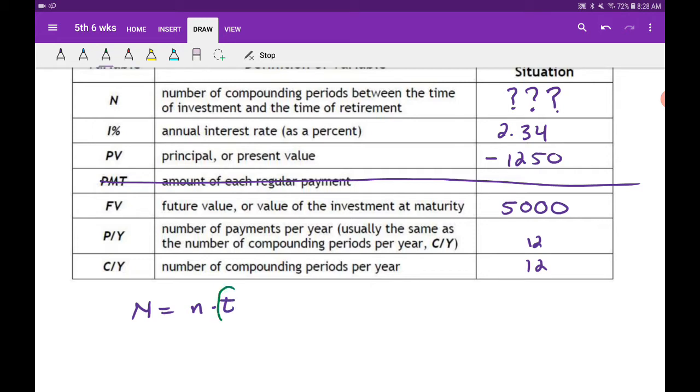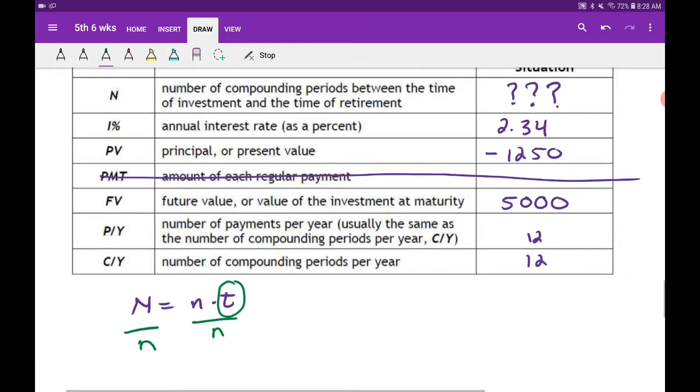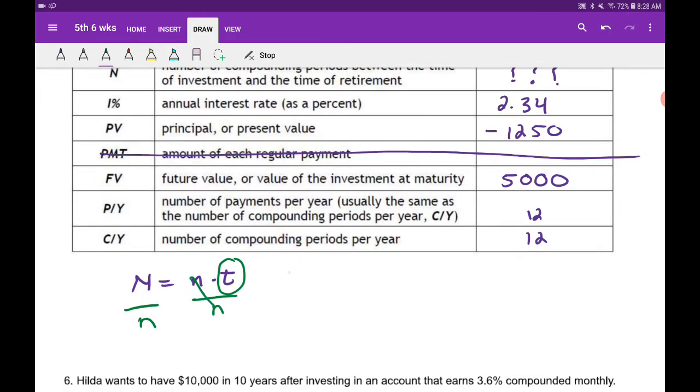Usually that just involves us dividing both sides by little n. When we do that, we're going to have big N over little n equals our t. That's what we're going to find here to help us out with this calculation.